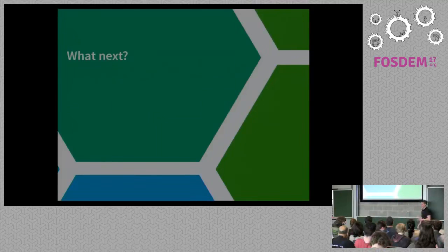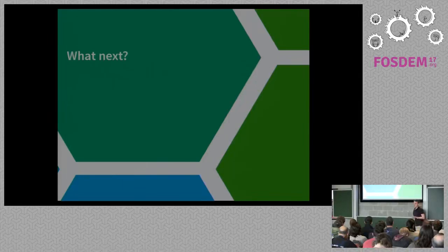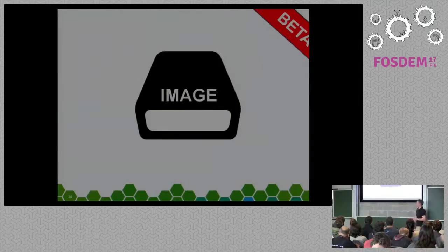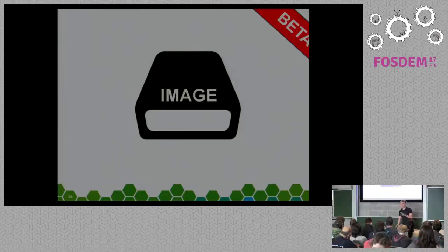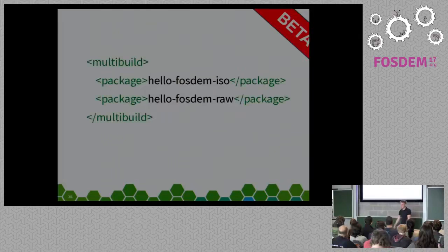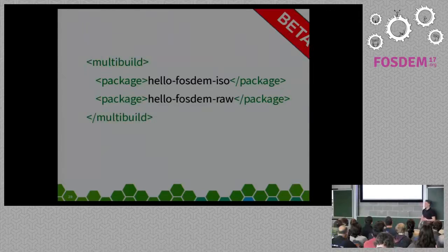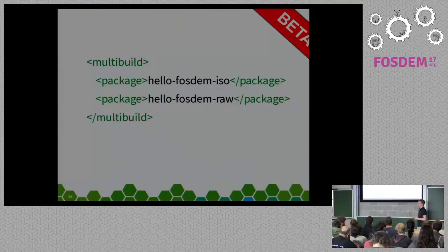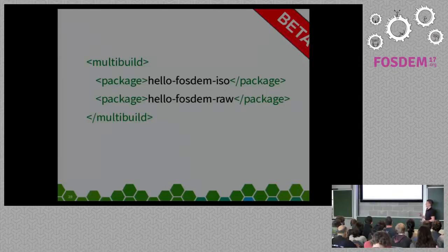That was basically about the main workflow for continuous integration. What is next in the build service: we are preparing a new release which we will release around mid-February. This will basically include the images feature I already showed you — that you can create some base images which you just need to adapt a little bit. The next feature is multiple packages, which means inside a package you can build several binaries out of it. This is now built in — we use it for instance for our ARM images. We have a base image description and then we apply several patches to the different boards. We have one package container but inside we build many different images for different boards like Raspberry Pi or Banana Pi.